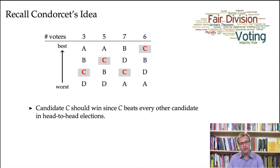So recall Condorcet's idea. His idea is that when we're given the data from a particular election, so we're given the preferences of a bunch of voters, so in this case there's 21 voters.